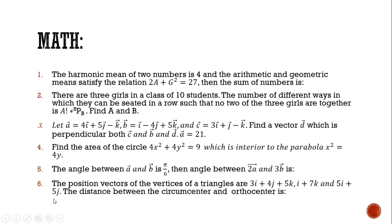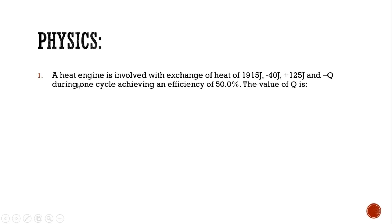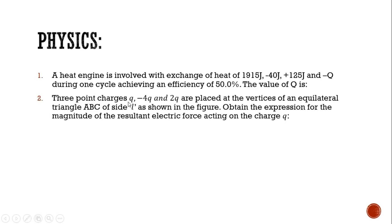Then the last question: the position vectors of the vertices of a triangle are given, and the distance between the circumcenter and the orthocenter is to be found. Another question involves 1915 joules minus 40 joules plus 125 joules and minus Q during one cycle achieving an efficiency of 50 percent — find the value of Q. Next: three point charges Q, minus 4Q, and 2Q are placed at the vertices of an equilateral triangle ABC with side L as shown in the figure; obtain the expression for the magnitude of the resultant electric force acting on the charge Q.